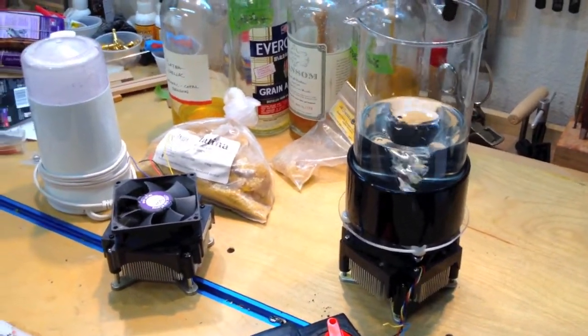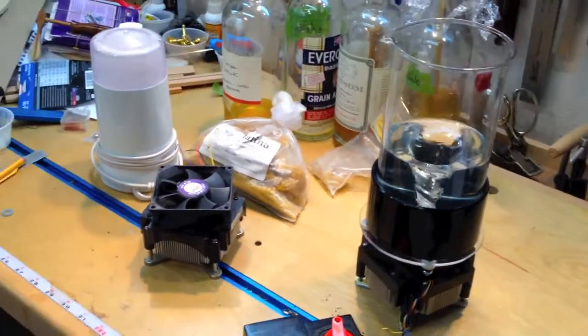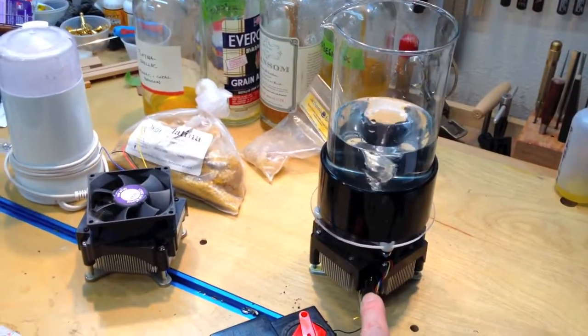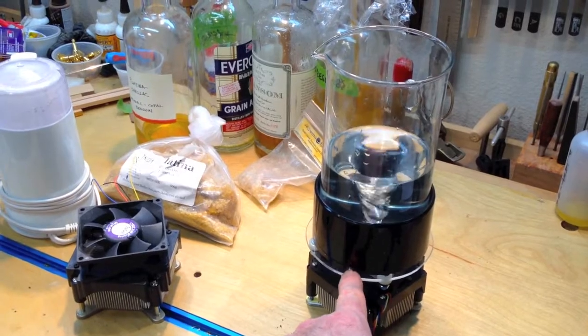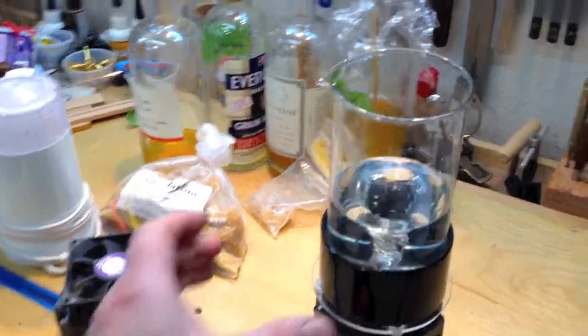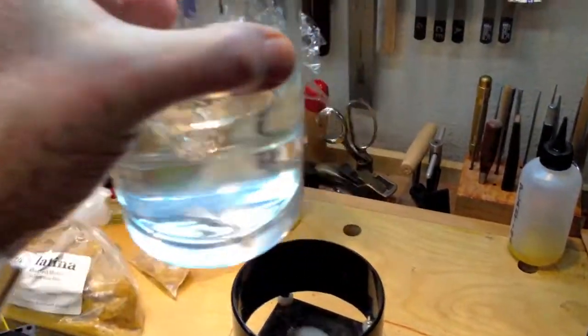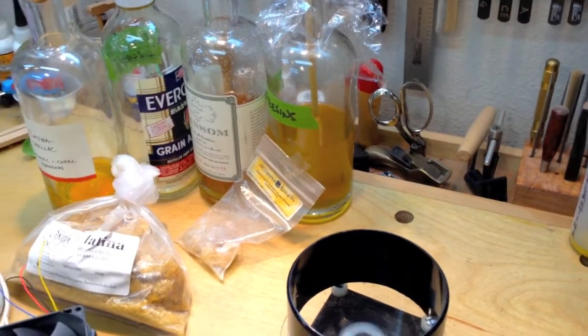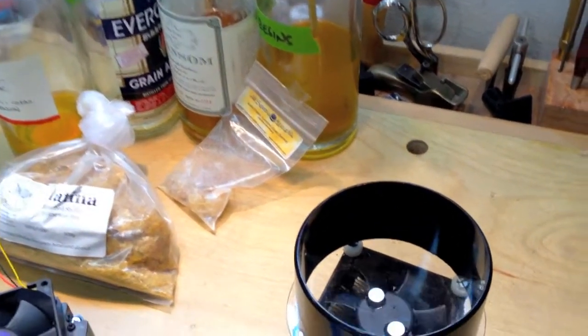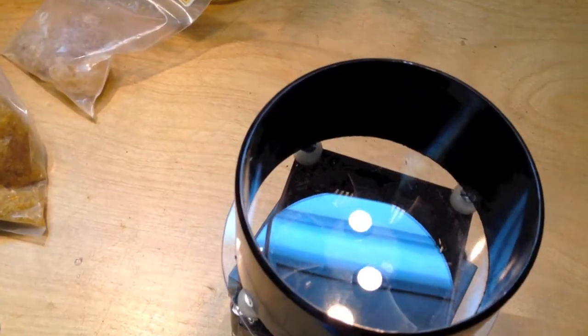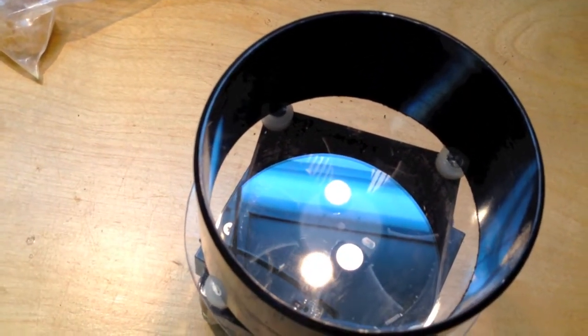Basically what I have here is the 12-volt fan with a plate built to sit on top of it. Inside the plate, on top of the computer fan, you can see that I attached two rare earth magnets centered over the fan.